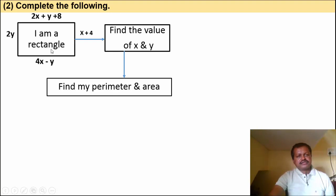The rectangle has sides expressed algebraically. One length side is 2x plus y plus 8, and the opposite length side is 4x minus y. The breadth sides are 2y and x plus 4.